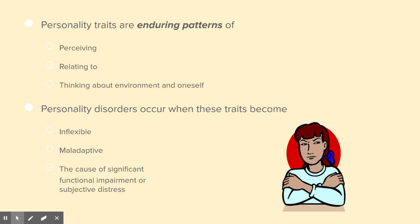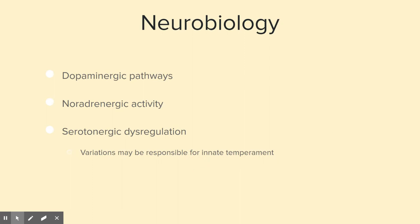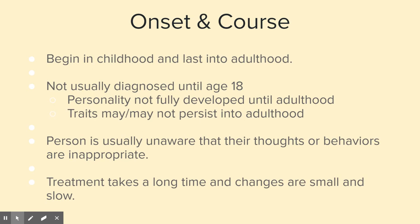Personality traits are enduring — not transient, not habits. They are patterns of perceiving, relating to people, and thinking about your environment and yourself, and they become very deeply ingrained. It becomes disordered when it causes you trouble, when these traits become inflexible and maladaptive, when the way you respond to the world causes impairment or distress. People with personality disorders get so inflexible with their coping mechanisms — they overuse certain coping and defense mechanisms and butt heads with the world. There is also a biological aspect: dopamine, norepinephrine, and serotonin all make us more or less likely to respond to the world in different ways.